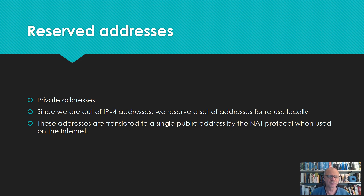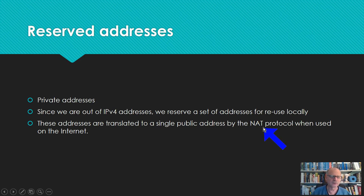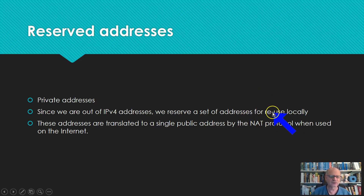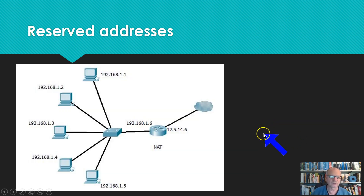We set aside some addresses and say, let's use these privately. And then we have something called NAT, or Network Address Translation Protocol, which runs usually on a router or a server, and can translate from an internal private address to a single external public address.